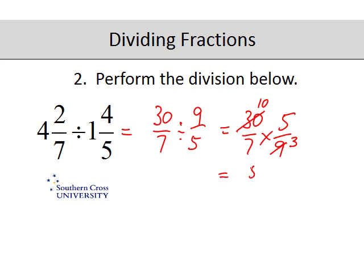So 5 tens are 50 over 7 threes are 21. So 21 will go into 50 twice, so that's 2 wholes and there will be 8 twenty-firsts left over.